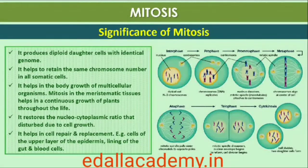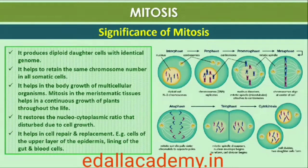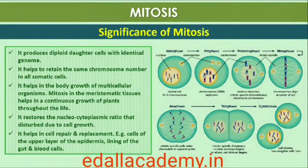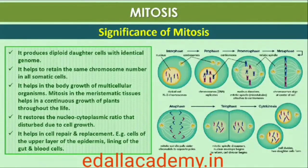Mitosis, or the equational division, is usually restricted to diploid cells only. However, in some lower plants and in some social insects, haploid cells also divide by mitosis. Mitosis usually results in the production of diploid daughter cells with identical genetic complement. The growth of multicellular organisms is due to mitosis. Cell growth results in disturbing the ratio between the nucleus and the cytoplasm; it therefore becomes essential for the cell to divide to restore the nucleo-cytoplasmic ratio. A very significant contribution of mitosis is cell repair — cells of the upper layer of the epidermis, cells of the lining of the gut, and blood cells are constantly replaced. Mitotic divisions in the meristematic tissues, the apical and the lateral cambium, result in continuous growth of plants throughout their life.